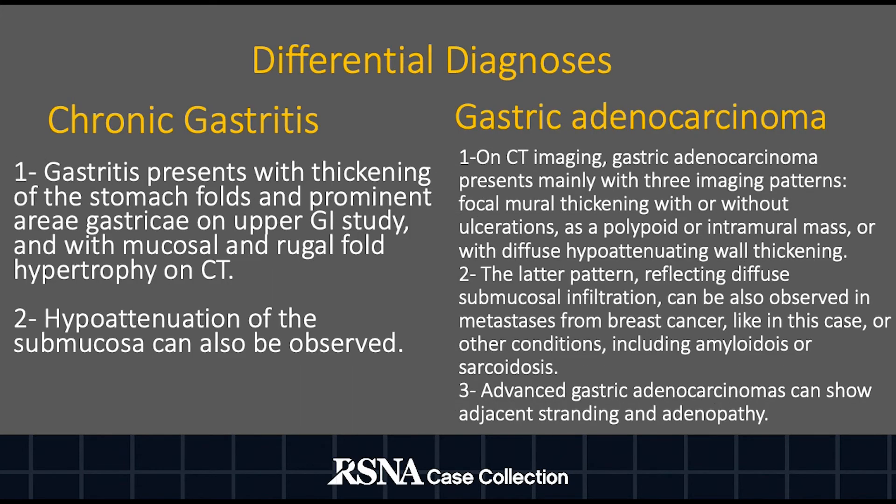The two primary differential diagnoses for this case were chronic gastritis and gastric adenocarcinoma. Gastritis presents with thickening of the stomach folds and prominent areae gastricae on upper GI study, along with mucosal and rugal fold hypertrophy on CT. Hypoattenuation of the submucosa can also be observed.